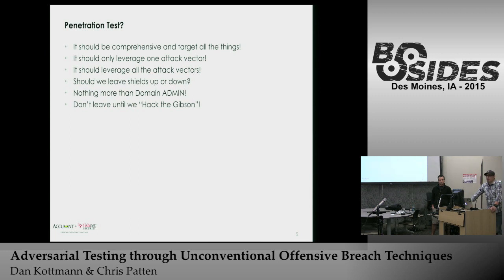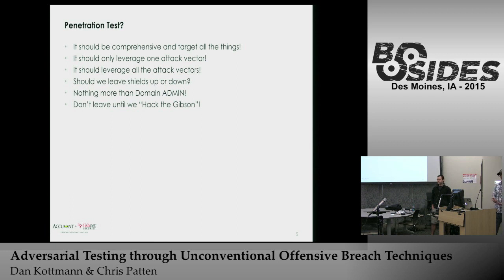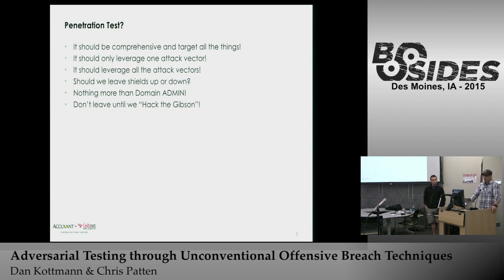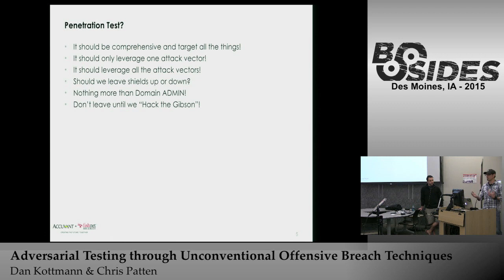Another common consideration is leaving the shields up or down — IDS, IPS, HIDS, HIPS. For a PCI engagement, they may want to bring the shields down to assess underlying vulnerabilities and get a true understanding of risk exposure. Or if they leave them up, you're testing the effectiveness of blocking systems, but you don't know the vulnerability exposure in case those first-line defenses fall over.